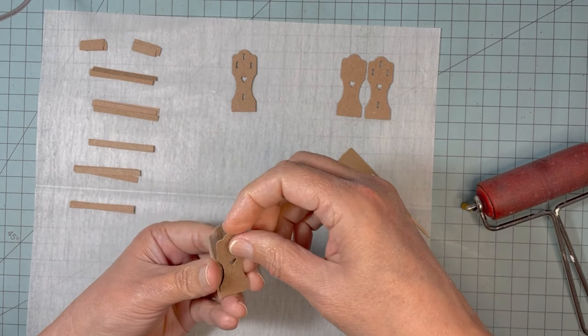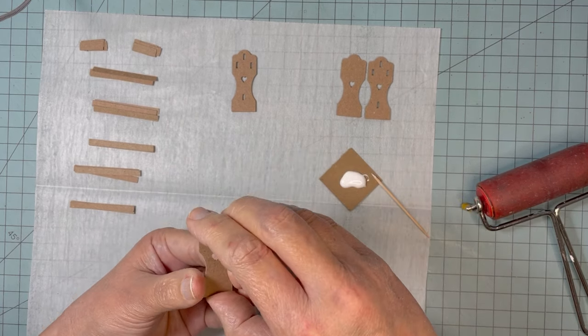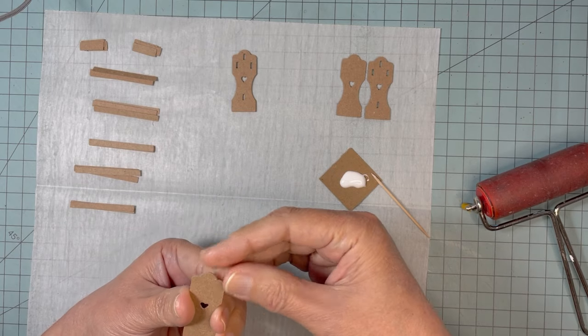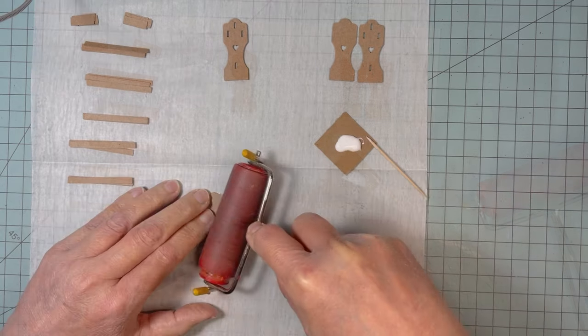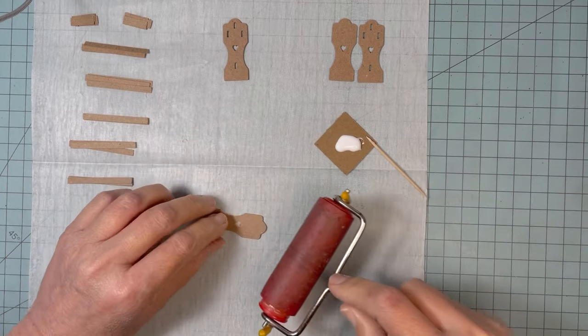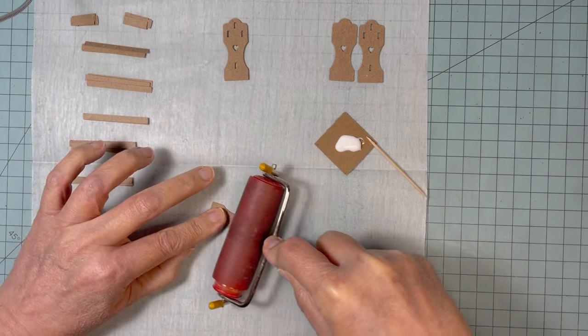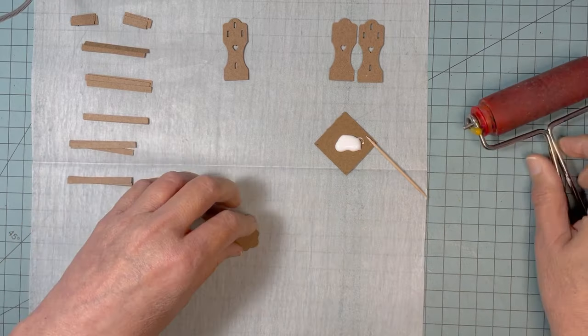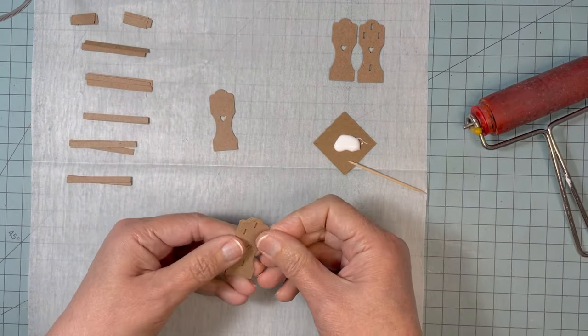Here I'm gluing the inner layers together and the outer layers together, and then I will glue those together to make the ends. The inner piece of the end is the one that has the little slits in it. That is a guide for me to know where to put the crossbars of the quilt rack.